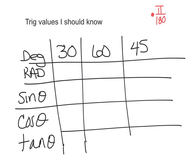If you want an answer in degrees, multiply by 180 over pi. Remember, what you want goes on top.